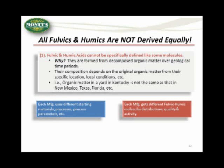The second key factor is processing technology. Our processing technology opens up the functional groups, removes the passivation components, and we design and select the proper ratio between fulvics and humics. That specific processing technology, combined with material selection, enables us to develop highly active — biologically, chemically, and geologically — active materials.